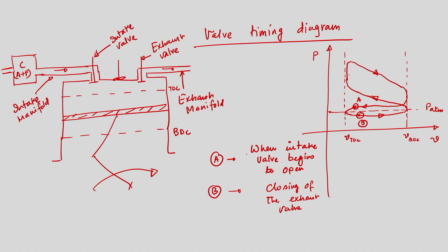During the period from A to B, both the intake and exhaust valves remain open simultaneously. This time period when both valves are open is known as the valve overlapping region.